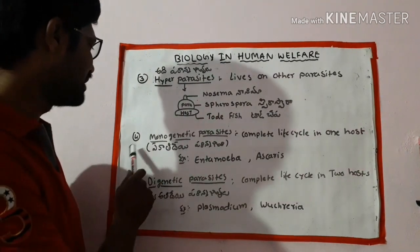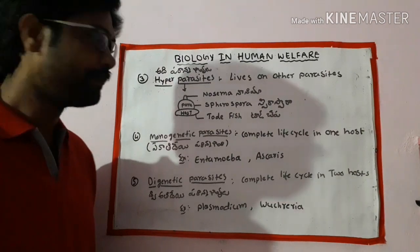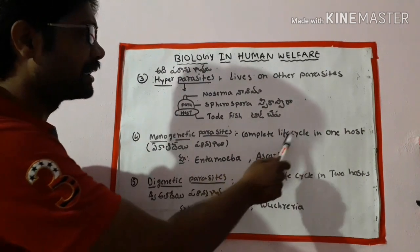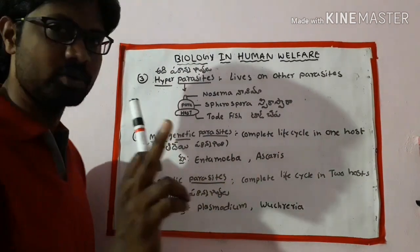The fourth type is monogenic parasites. Monogenic parasites complete their entire life cycle in one host.